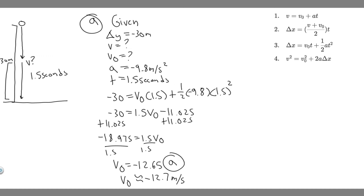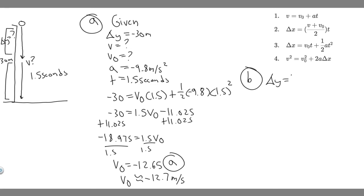Now for part B — the total distance the object travels during the fall. There's some additional distance above the 30-meter mark that we need to find. Let's call that delta y. Once we find it, we add it to 30 to get the total. We need to think about what variables we know for that upper interval. Acceleration is still minus 9.8 m/s² — that doesn't change.